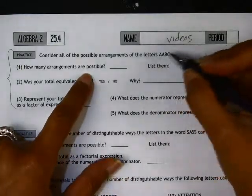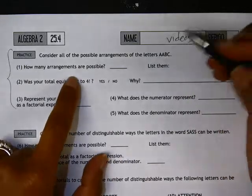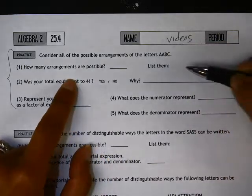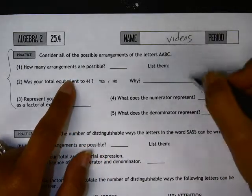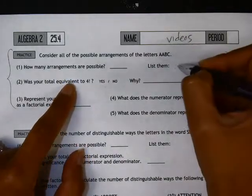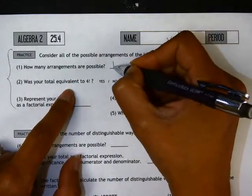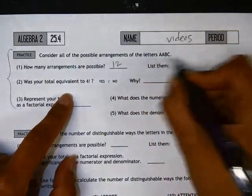If you look at these four letters, A, A, B, and C, number one is asking you to list all the different arrangements that are possible. So here, I'm not going to list all of them, but if you did, you should come up with 12 different ways of arranging those four letters.